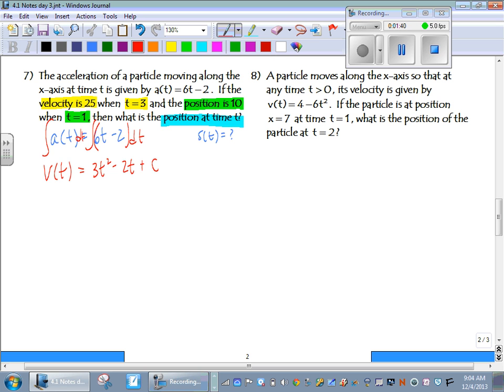So now, just like before, we're going to want to figure out what c is. In this case, we're going to use this information, velocity is 25 when t is 3. So 25 equals 3 times 3 squared minus 2 times 3 plus c. So 25 equals 27 minus 6, so 21 plus c. So c equals 4.